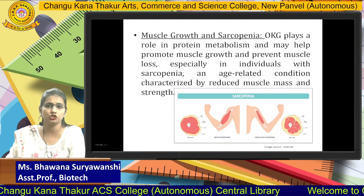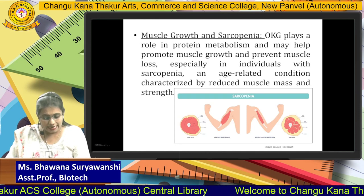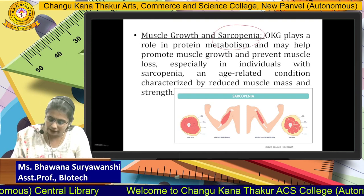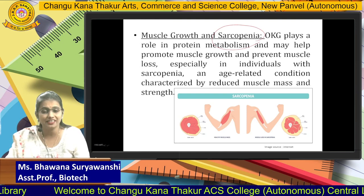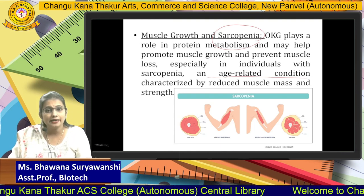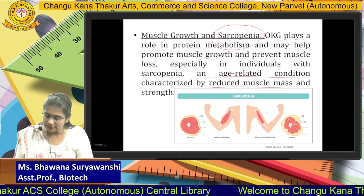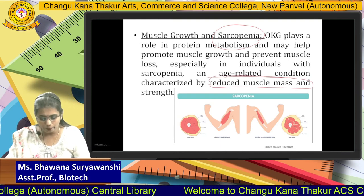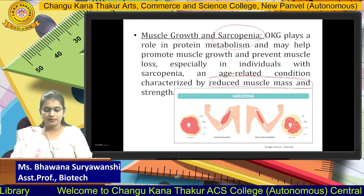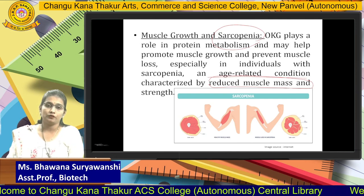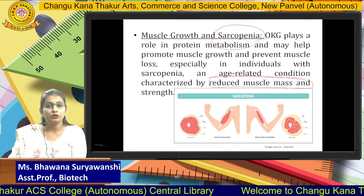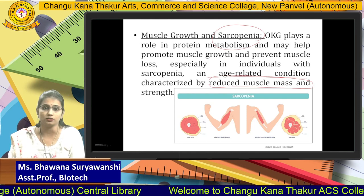The next potential application is muscle growth. OKG plays a role in protein metabolism and is also very well known for the treatment of sarcopenia. Sarcopenia is an age-related, progressive condition in which patients have significantly reduced muscle mass and strength. In order to fight this progressive disease, OKG is a promising candidate that helps promote protein metabolism, promote muscle growth, and reduce muscle loss.